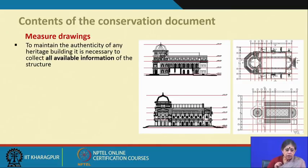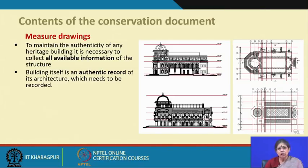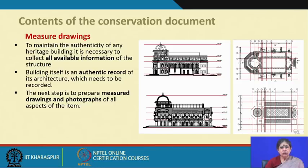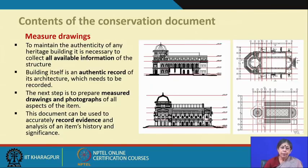Why measured drawing? To maintain the authenticity of any heritage building, it is necessary to collect all available information of the structure. Each building, structure, or site is an authentic record of its architecture and needs to be recorded. Even if we change it or do further intervention, we must understand at what stage we found that structure. The measured drawing is the first and foremost step, and we also have to have photographic documentation covering each and every part of the structure. These are visual records that can be used to accurately record evidences and analysis of an item's history and significance.